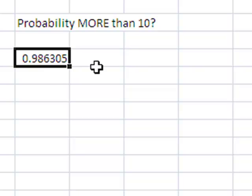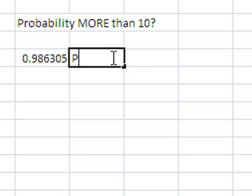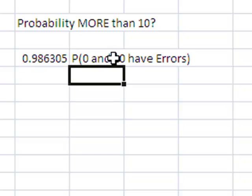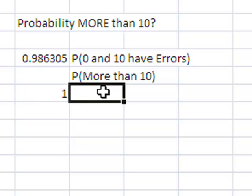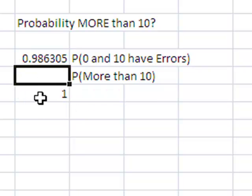Now, this 0.98635 is the probability that between 0 and 10 have errors. All right, remember how we did it before? Now, I want to know what's the probability of more than 10. Remember what I learned, what we learned about probability is that this probability plus this has to equal 1. So, since I know the two of them have to equal 1, I'm going to use a little Excel magic.